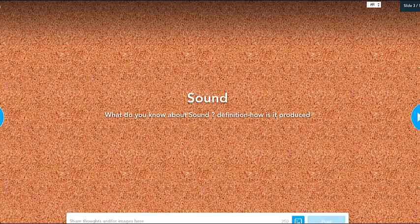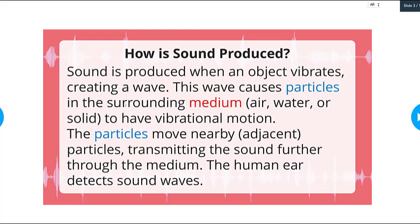It's a classwork activity. So how is sound produced? It's produced when an object vibrates, creating a wave. And this wave causes particles in the surrounding medium, for example, such as air, water, or solid, to have motion or vibrational motion. And these particles will move the nearby adjacent particles and will transmit the sound further through the medium.